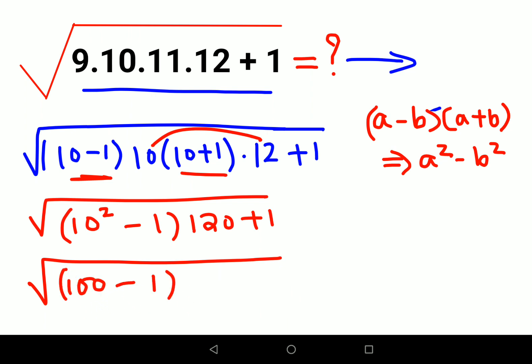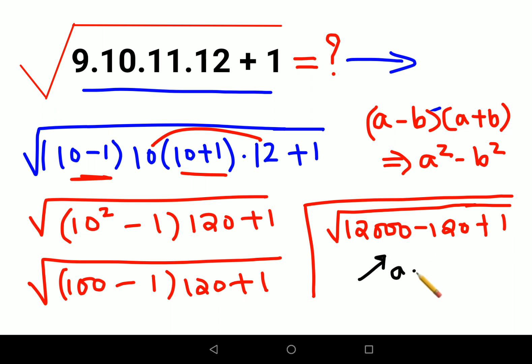This then becomes 100 minus 1 into 120 plus 1. When you open this bracket, this looks like 12,000 minus 120 plus 1. Now the problem here is putting this particular value in the form of a minus b the whole square looks very tricky. People got stuck here.